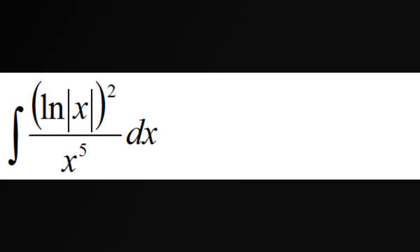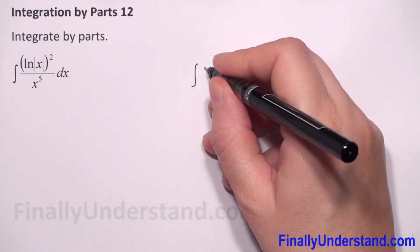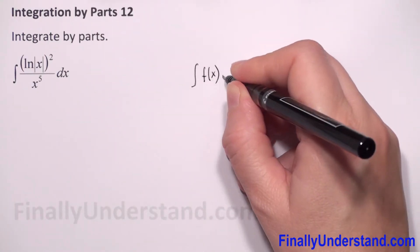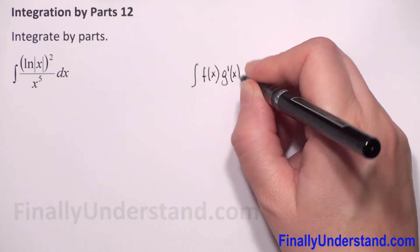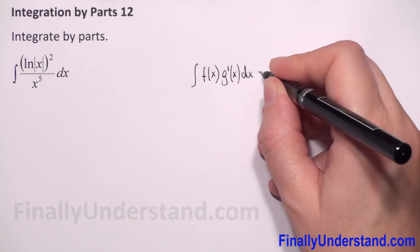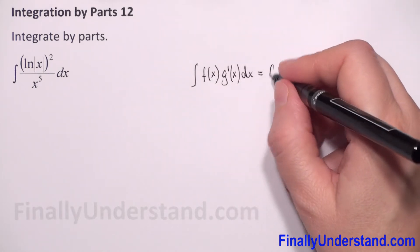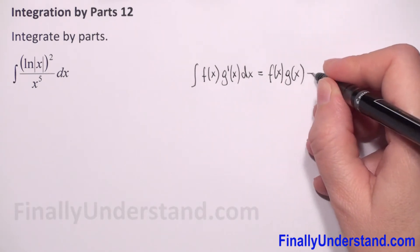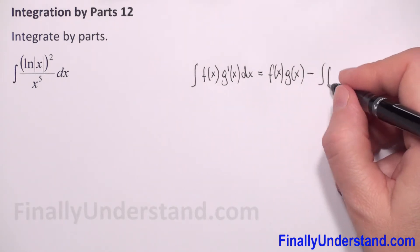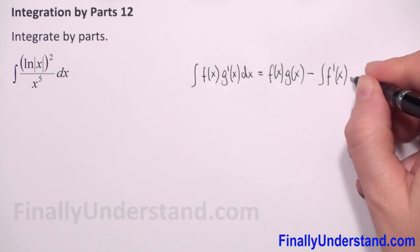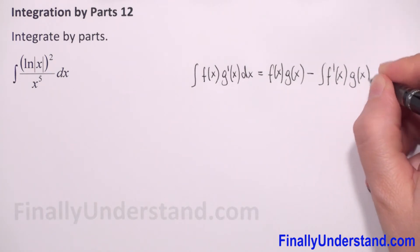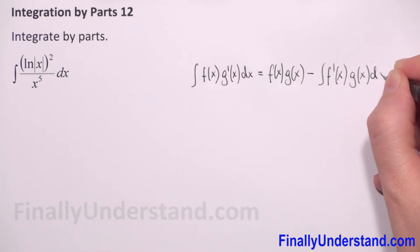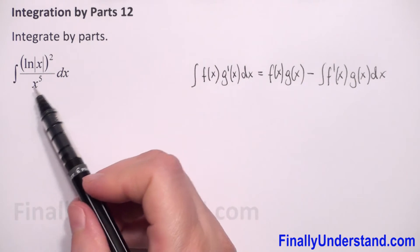Let me remind you first the formula for integration by parts: when we have the integral of f(x) times g'(x) dx, this is equal to f(x) times g(x) minus the integral of f'(x) times g(x) dx. So here we have division,